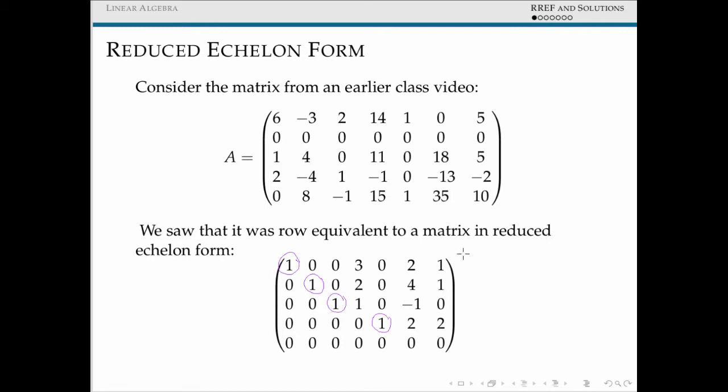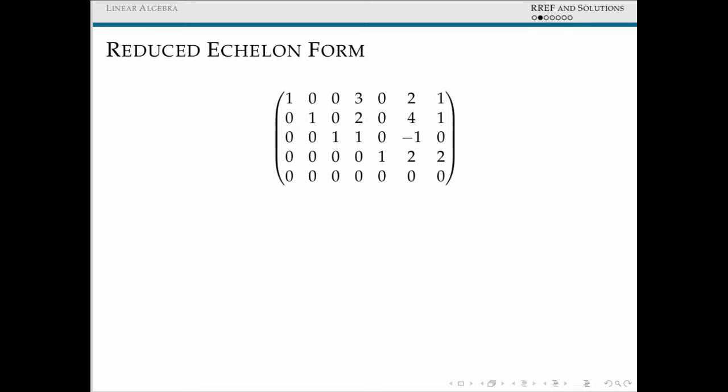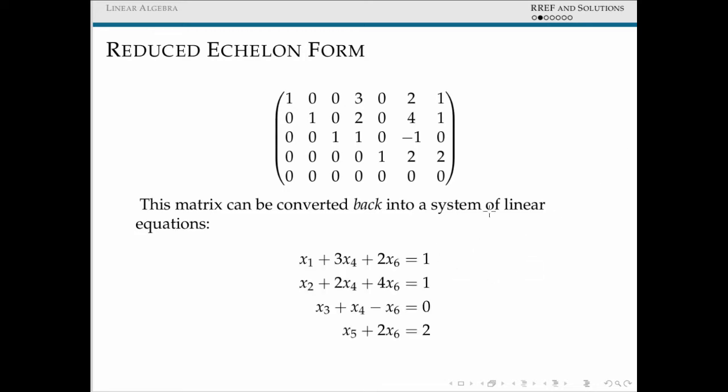So this reduced echelon form actually gives us a lot of information about the shape of solutions to these linear systems. Looking back at our original system here, this actually corresponds to another system of linear equations. It isn't the same one that we started out with in the beginning of the problem, but it's still an equivalent system of linear equations.